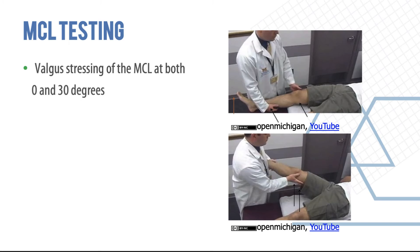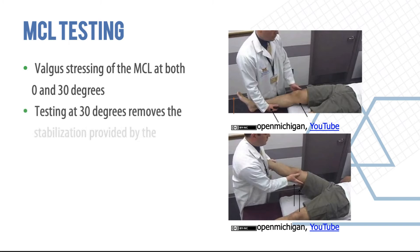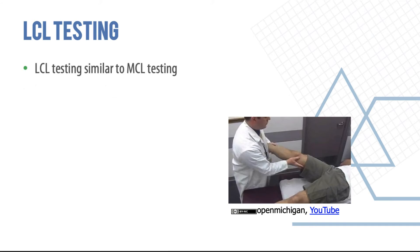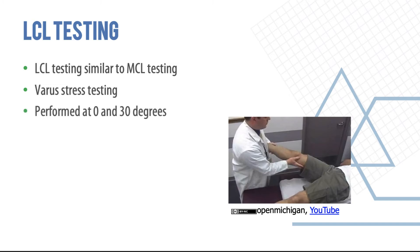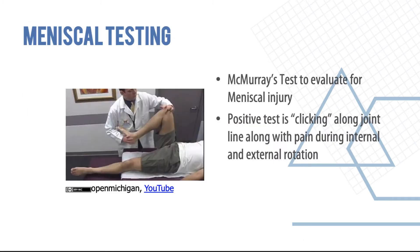For LCL testing, perform a varus test — exerting force to push the tibia inward — again at zero and 30 degrees, similar to MCL testing. For meniscal testing, McMurray's is the classic test: flex the knee, then internally or externally rotate and extend the knee, feeling for clicking along the joint line and noting pain experienced by the patient.